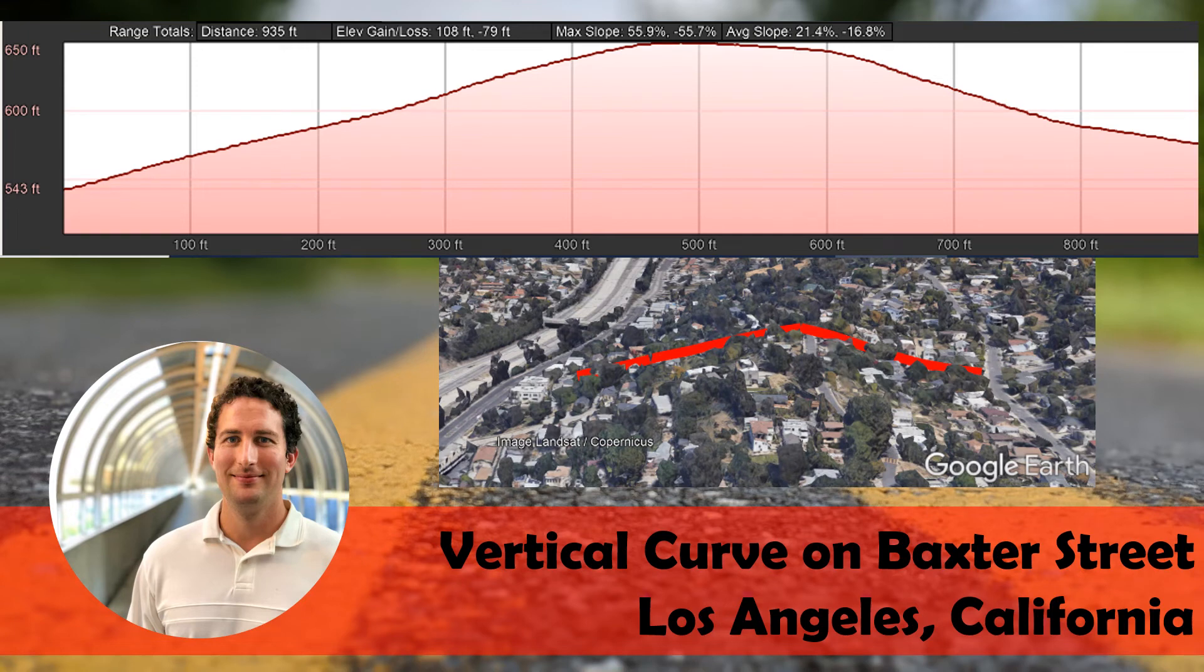Baxter Street in the Echo Park neighborhood in Los Angeles, California is famous for its very steep slopes. We're going to take a look at the vertical curve design for this street.